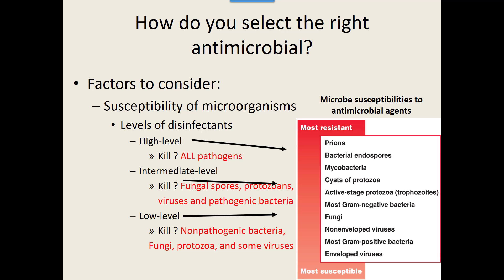There are different levels of disinfectants. High-level disinfectants kill all pathogens, including endospores and viruses — the most resistant organisms. Intermediate-level antimicrobials kill fungal spores, protozoans, their cysts, viruses, and pathogenic bacteria. Low-level disinfectants, which we use every day, can kill non-pathogenic bacteria, some fungi, some protozoa, and some viruses. A lot of the basic disinfectants used in our lab are low to intermediate level.